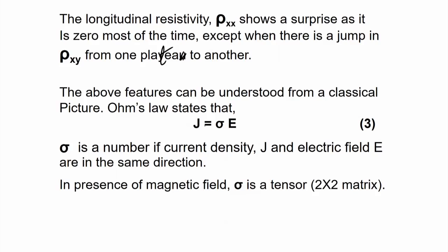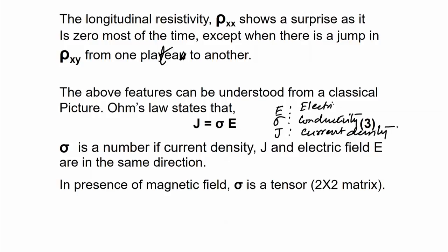Ohm's law states that J = σE, another way of writing V = IR, where σ is conductivity, J is current density, and E is the electric field. If J and E are pointing in the same direction, σ is a scalar number: J_x = σE_x. But in the presence of a magnetic field, σ is a tensor — a 2×2 matrix.